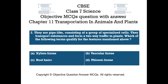Question number 2. They are pipe-like, consisting of a group of specialized cells. They transport substances and form a two-way traffic in plants. Which of the following terms qualify for the features mentioned above? Option A: Xylem Tissue. Option B: Vascular Tissue. Option C: Root hairs. Option D: Phloem Tissue.